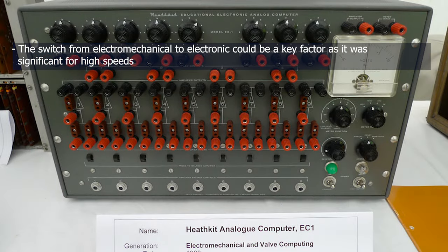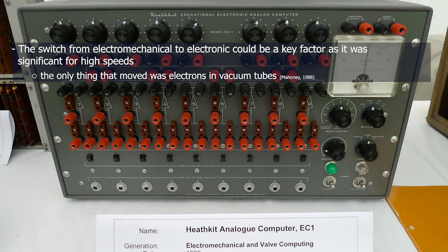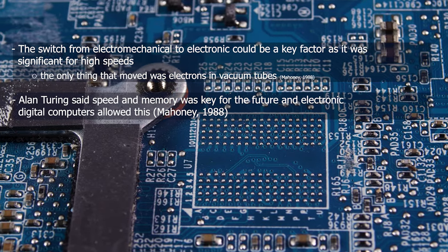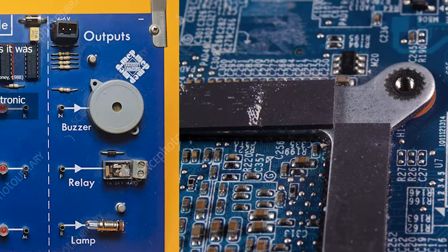Arguably, the switch from electromechanical to electronic could be a key factor, as it was significant in achieving high speeds—the only thing that moved was the electrons in the vacuum tubes. Alan Turing, the father of computing, said that speed and memory were the key for the future, and the electronic digital computer allowed this.